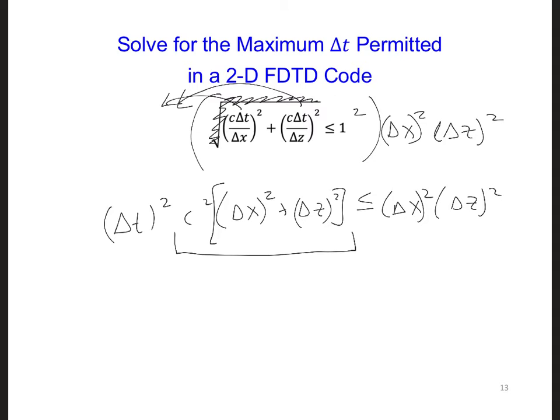we're going to get delta t squared has to be less than delta x squared delta z squared over everything on the left side.